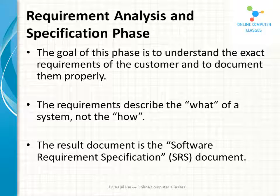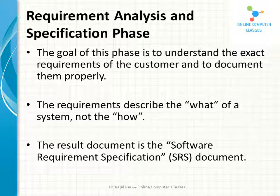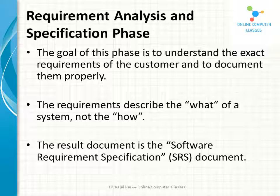This phase produces a large document written in a natural language, which contains the description of what the system will do without describing how it will be done. The resultant document is called the Software Requirement Specification, or SRS document. This SRS document may then act as a contract between the developer and the customer. If the developer fails to implement the full set of requirements, it may lead to failure to implement the contracted system, and the customer cannot deny the requirements that were agreed upon.